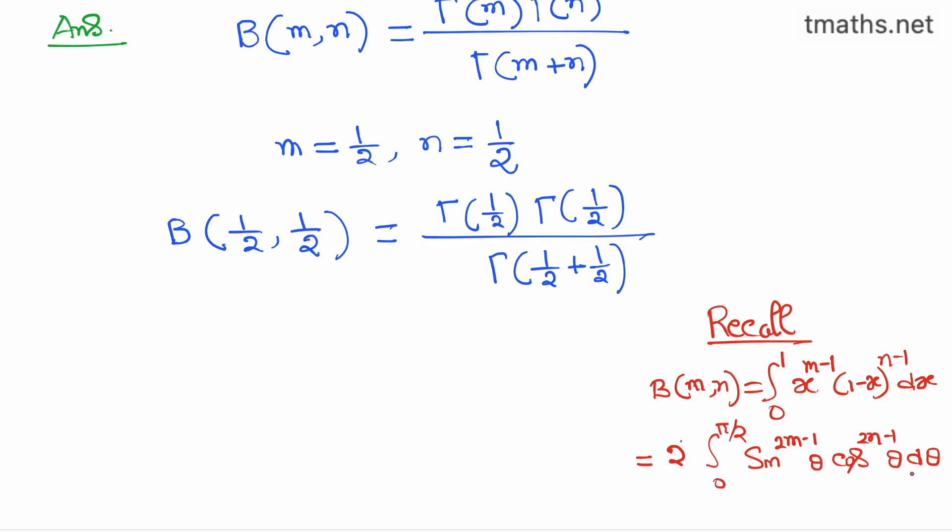Now, if we use this rule, the left hand side will be equal to 2 times integration from 0 to π/2, sin to the power 2m minus 1, but m is half, so 2 times half minus 1, cos to the power 2 times half minus 1, because n is half, theta d theta